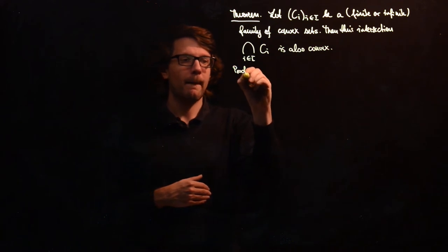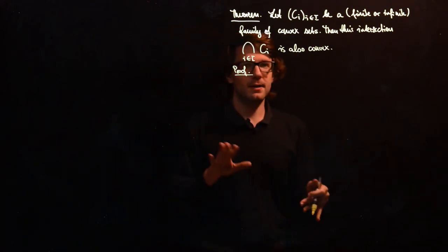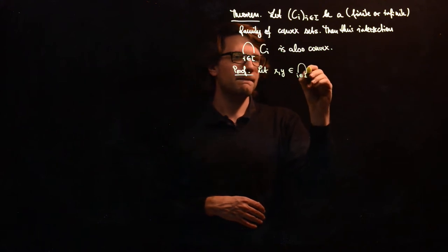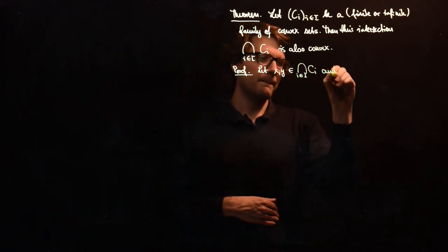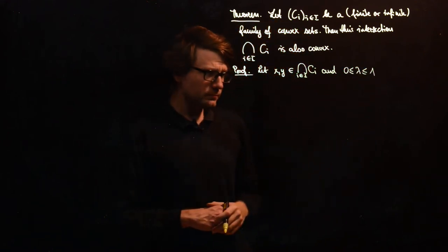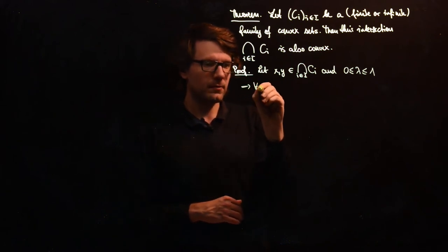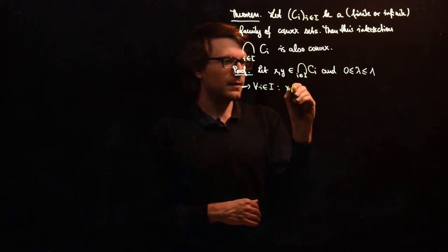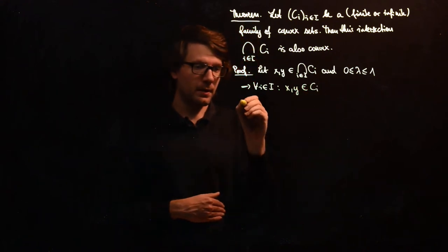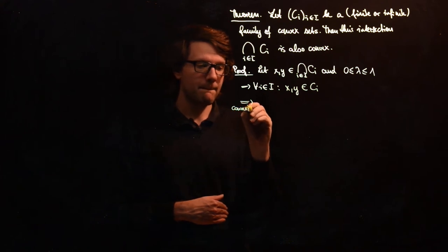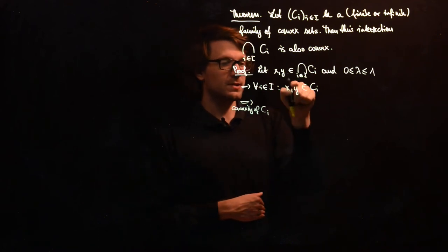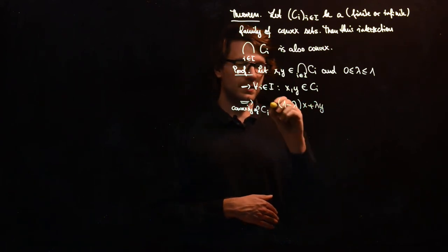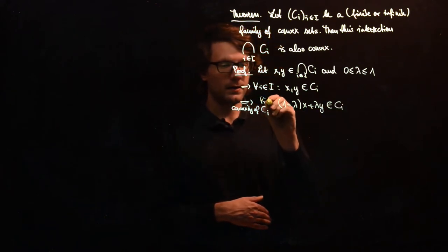Let's prove this. Again, we just apply the definition — that will be enough. Let x and y be in this intersection, and let lambda be between 0 and 1. This means that for all i in our index set, x and y are in C_i. And now by convexity of C_i — since each C_i is convex — we know that (1 - lambda)x + lambda*y is also in C_i for all i in the index set.